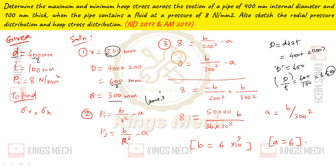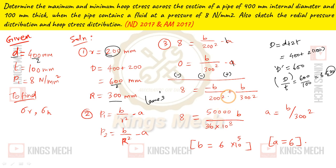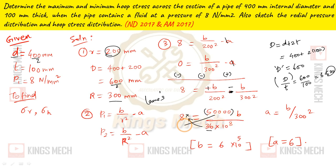Subtracting the two equations: 8 minus 0 = 8. B divided by 200 squared minus B divided by 300 squared. After simplification: 50000 B divided by 36 into 10 to the power 8 = 8. Moving 50000 to the bottom, we get B = 6 into 10 to the power 5.